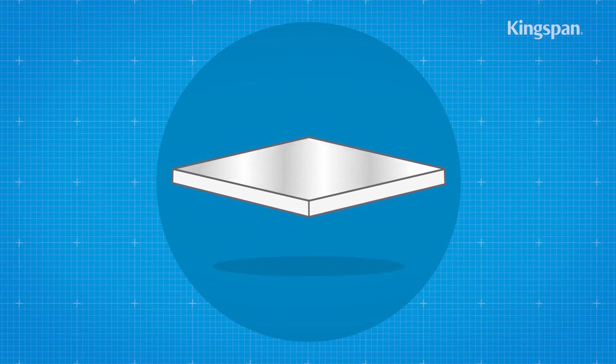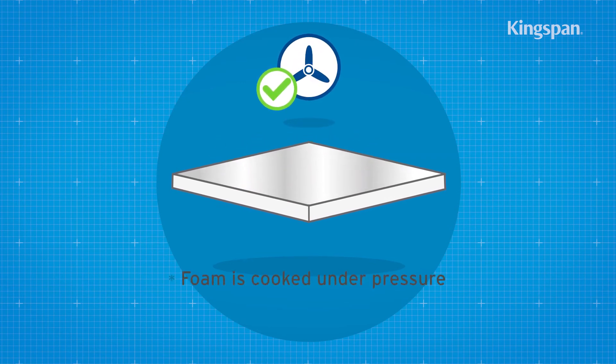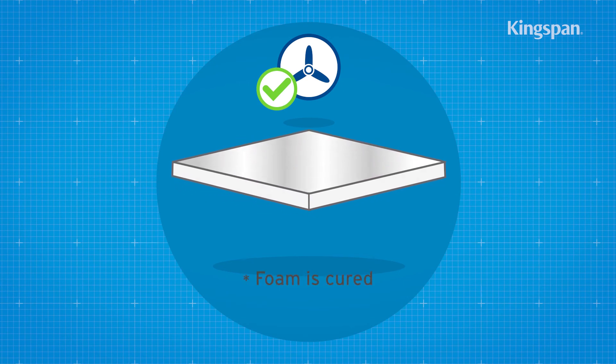Once it has reached the necessary thickness, the foam is cooked under pressure. It is then moved onto a secondary oven to cure and harden, becoming bright pink in color.